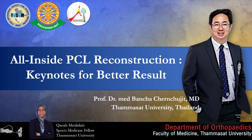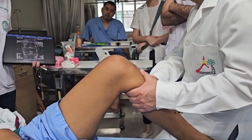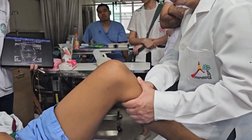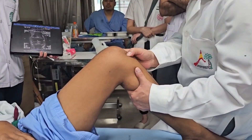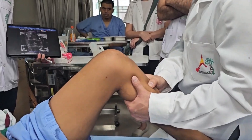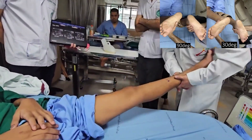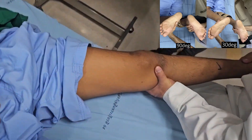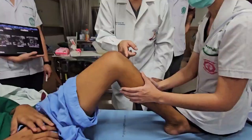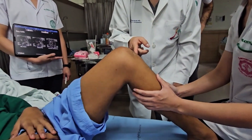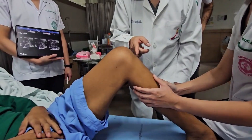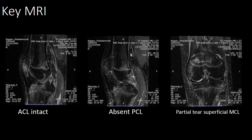All inside PCL reconstruction: keynotes for better result. A 17-year-old male patient with a history of an accident three months ago. Physical examination of the left knee reveals a positive posterior drawer test. Varus and dial tests are negative. The quadriceps active test appears positive. The patient is diagnosed with an isolated PCL injury in the left knee.